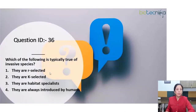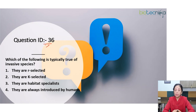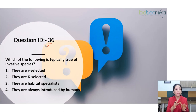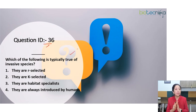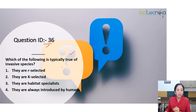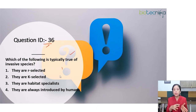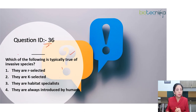Now let us move to question ID number 36. The question asks: which of the following is typically true of invasive species? This is a very interesting and at the same time quite easy question. Options given are: they are r-selected, k-selected, they are habitat specialists, or they are always introduced by humans. To answer this question, you must know what we understand by invasive species.